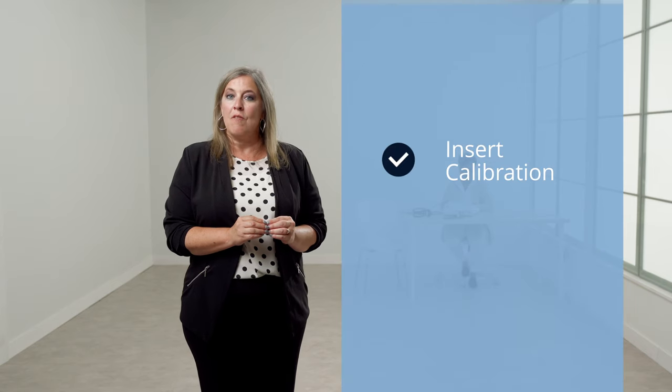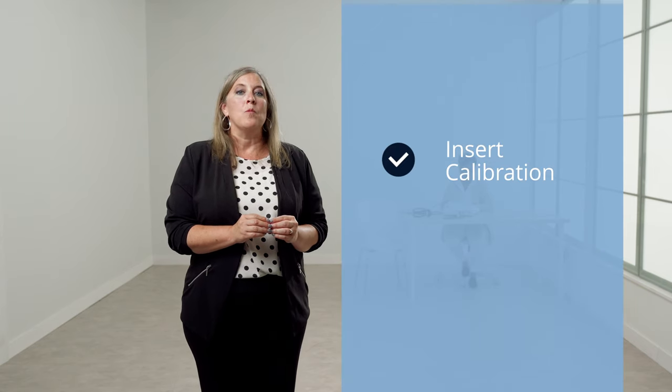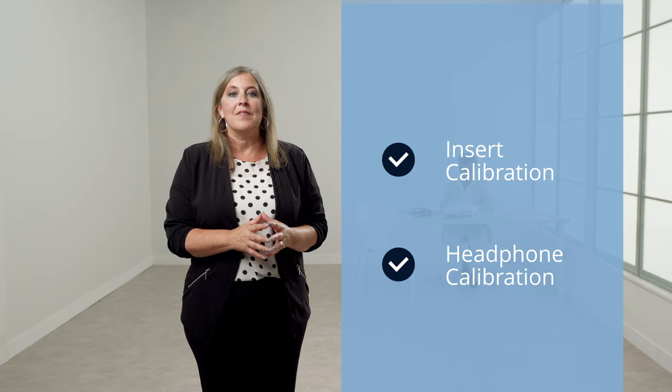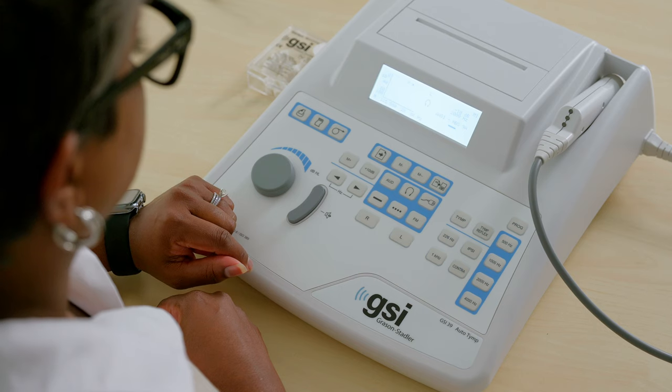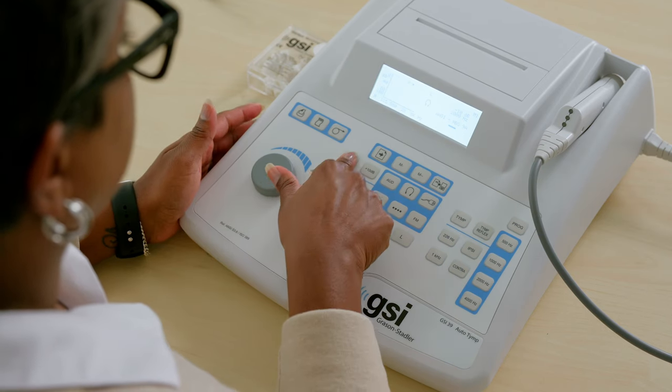The button with the picture of the insert phone will activate the insert earphone calibration, while the button with the picture of the headphones will activate the headphone calibration. Verify the image of the selected transducer that appears on the LED screen matches the transducers connected to the unit.